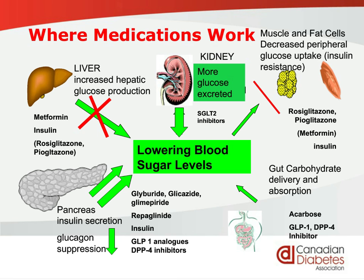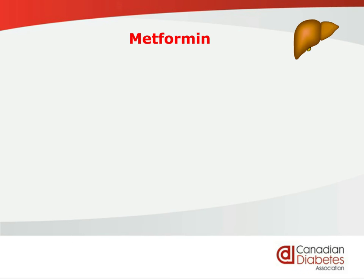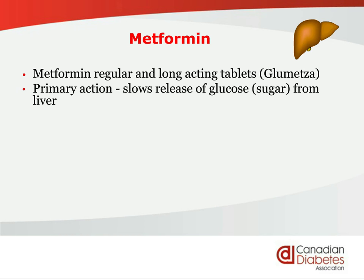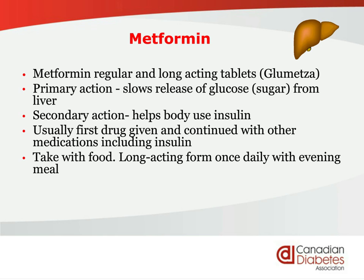The first medication usually prescribed for everyone with diabetes is metformin. It works in the liver. It comes in regular tablets and there is a long-acting form called Glumetza, which has fewer side effects. The primary action of metformin is to slow the release of sugar from the liver, and secondarily, it helps the body use the insulin it has. It's taken with food. The long-acting form is once a day, whereas regular tablets are often taken multiple times a day. The dose is from 500 milligrams up to 2,550 milligrams — you could take as much as two at breakfast, one at lunch, and two at supper.